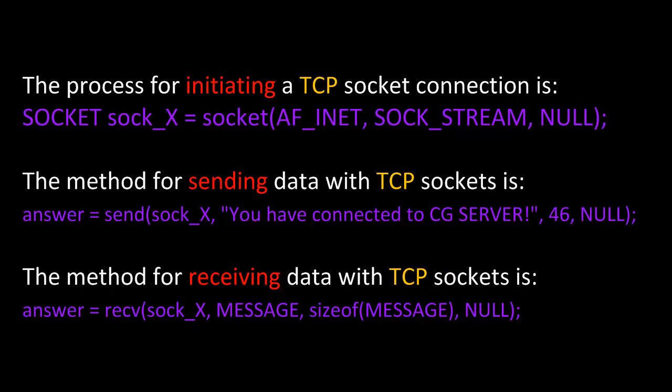The process for initiating a TCP socket connection is as follows. You would instantiate an object or build an instance of the socket class, and then once you do, you would call the constructor and pass in the appropriate arguments. The method for sending data with TCP sockets is to simply use the send method. The method for receiving data with TCP sockets is to use the recv, or receive, method.